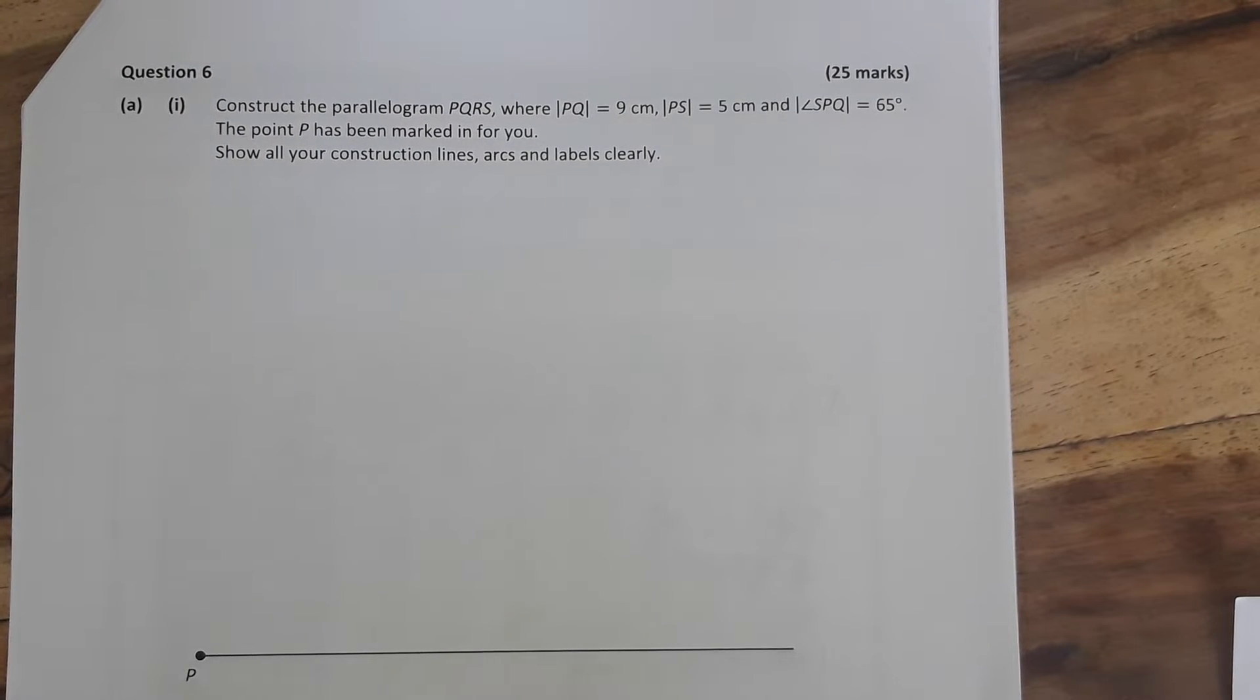Okay, so this is question six of the 2019 paper two. Construct the parallelogram PQRS where PQ equals nine centimeters, PS equals five centimeters, and angle SPQ equals 65 degrees. Show all your construction lines, arcs, and labels clearly.